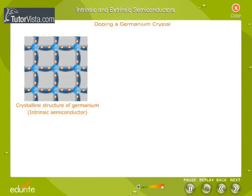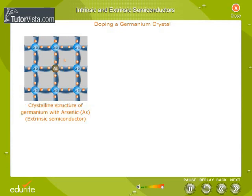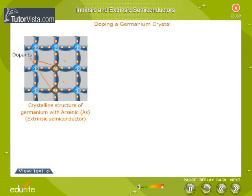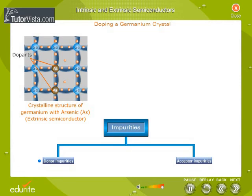Extrinsic Semiconductor. Conductivity of intrinsic semiconductors is very less at room temperature. To increase the conductivity, a small amount of external impurity is added to the pure semiconductor. Such a semiconductor then becomes an impure or extrinsic semiconductor. The process of deliberate addition of a very small amount of impurity into an intrinsic semiconductor to increase its conductivity is called doping, and the impurities are called dopants. The impurities are classified as donor impurities and acceptor impurities.